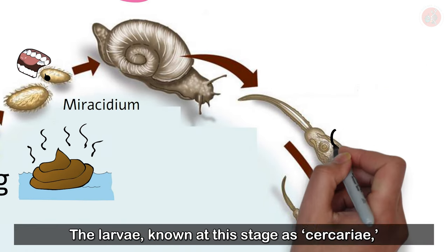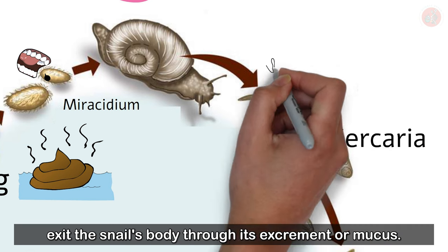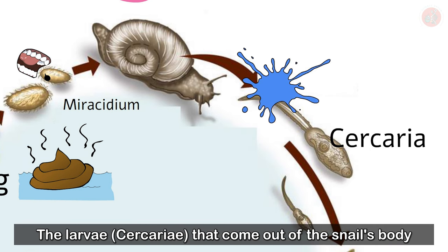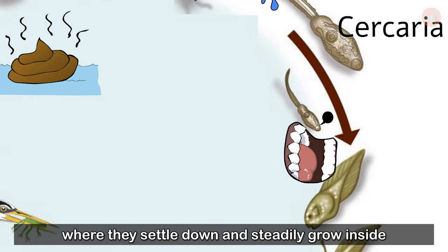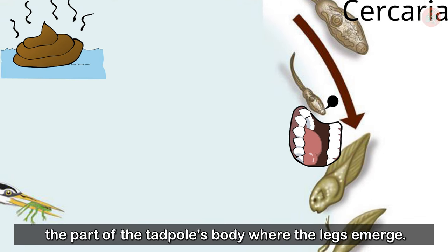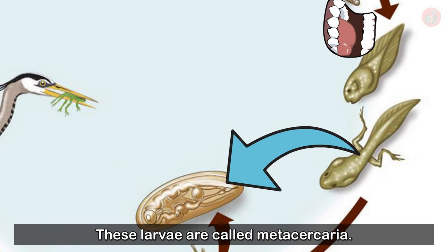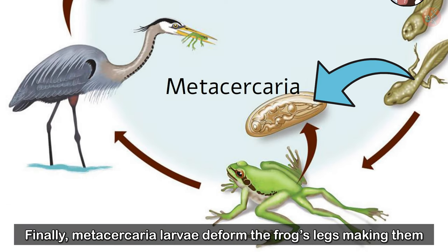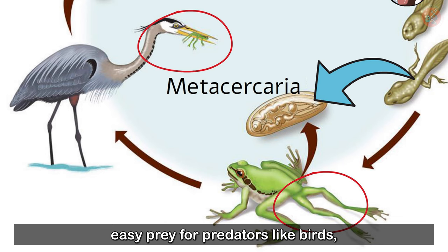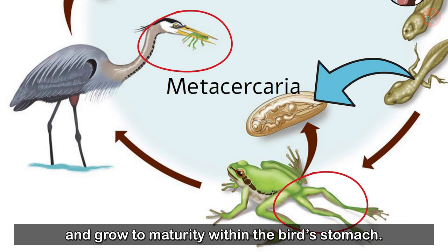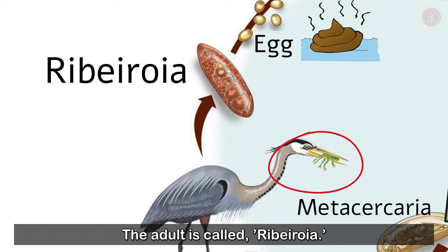The larvae, known at this stage as cercariae, exit the snail's body through its excrement or mucus. The larvae that come out of the snail's body are eaten by tadpoles, where they settle down and steadily grow inside the part of the tadpole's body where the legs emerge. These larvae are called metacercariae. Finally, metacercariae larvae deform the frog's legs, making them easy prey for predators like birds, and grow to maturity within the bird's stomach. The adult is called Ribeiroia.